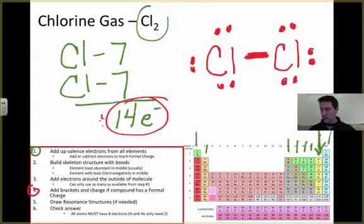Resonance structures - we haven't even talked about what that is. This has no resonance structures. Finally, we check our answer, which is probably the most important step. Every element except for hydrogen should have eight valence electrons around it.